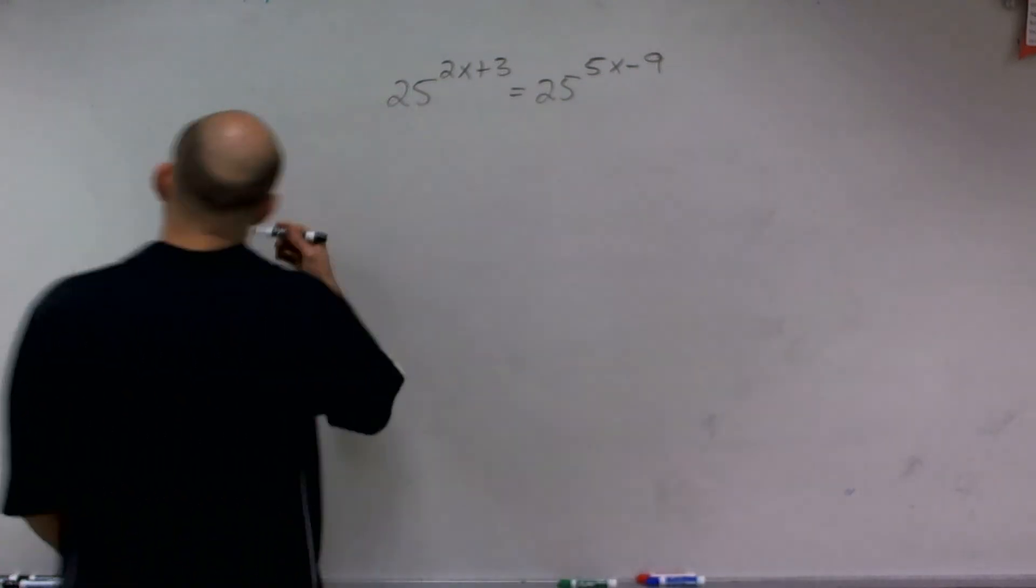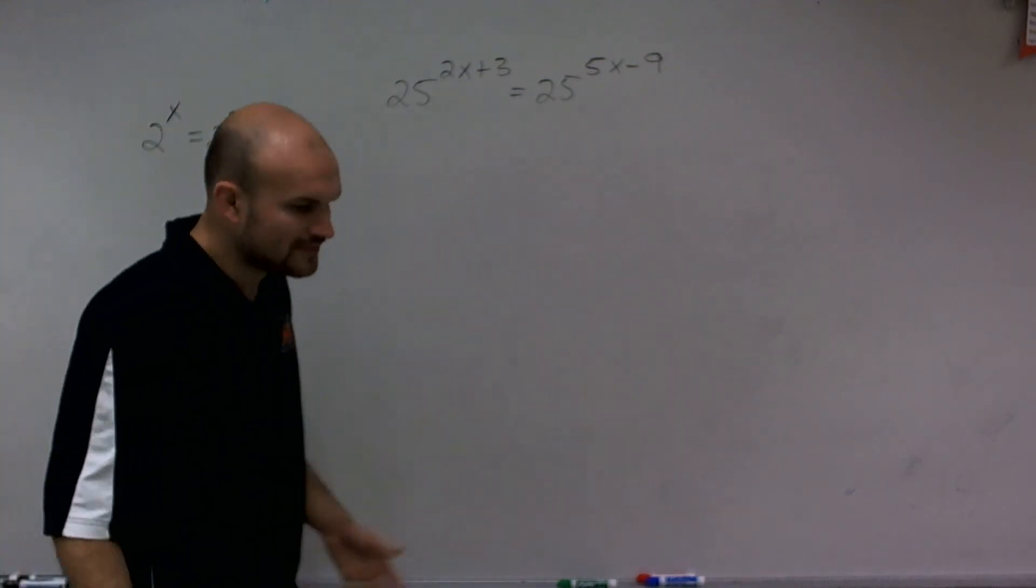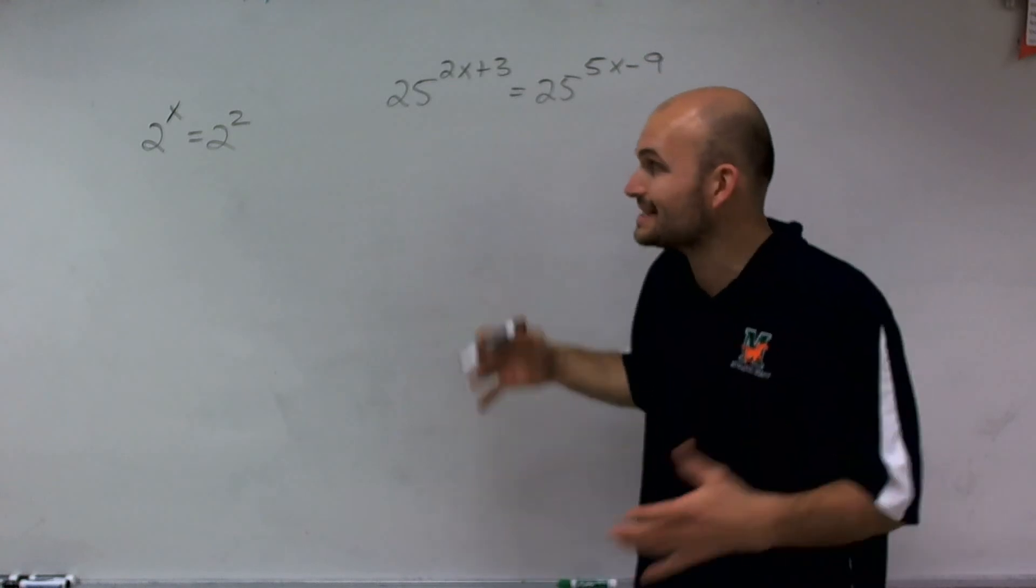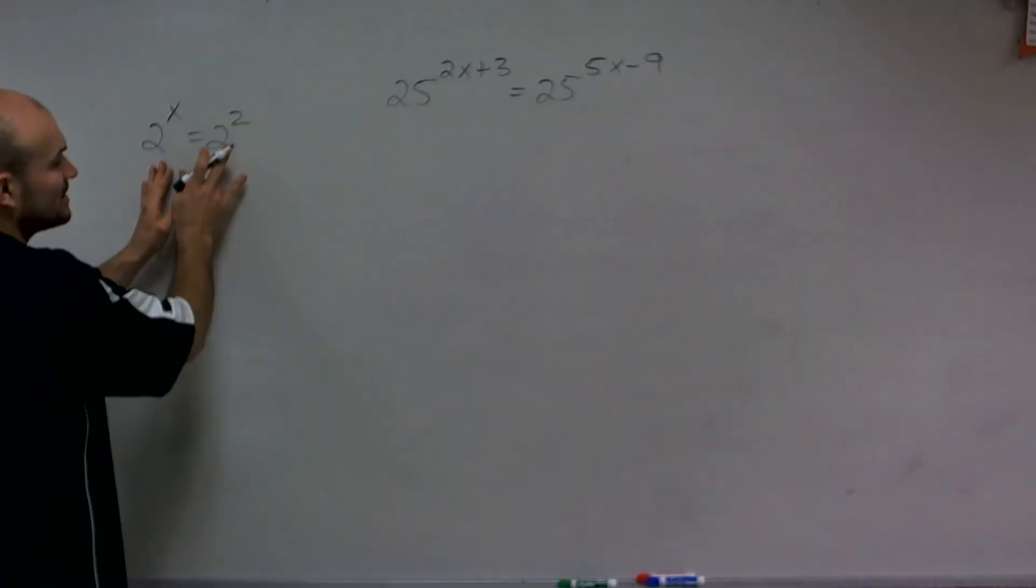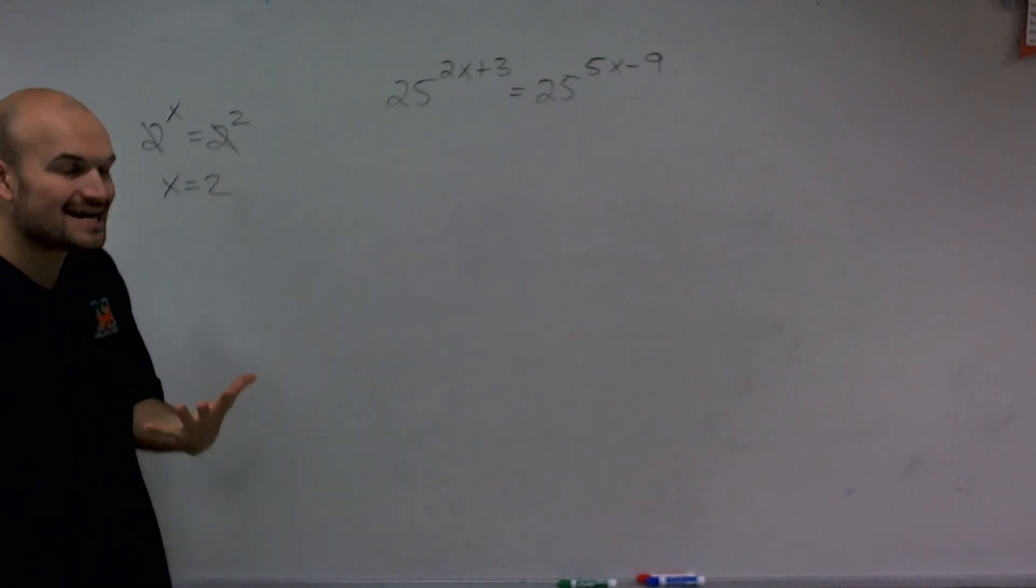So let's go and take a look at, let's say for instance, we had 2^x equals 2^2. Well, obviously, if we're going to try to find the value of x, we know that that value of x has to equal 2. So really, knowing what the bases are is really irrelevant. We can just say that we know that x has to equal 2.